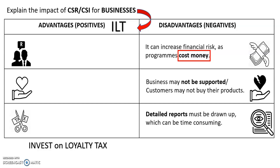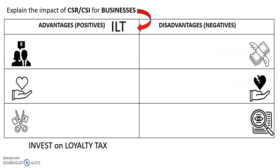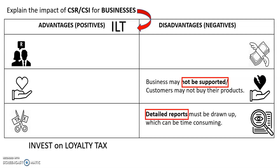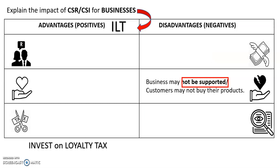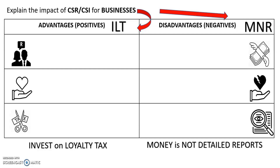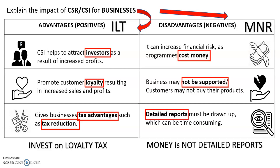Our core words to remember: it costs money; the businesses may not be supported; and detailed reports. Let's take away the words and see if you can remember. The broken heart — businesses may not be supported. The 'I' on the reports — detailed reports are time consuming. And the money can fly away — it's a financial risk because it costs money. This question you can remember as MNR, or 'Meneer' in Afrikaans: Money is Not detailed Reports.